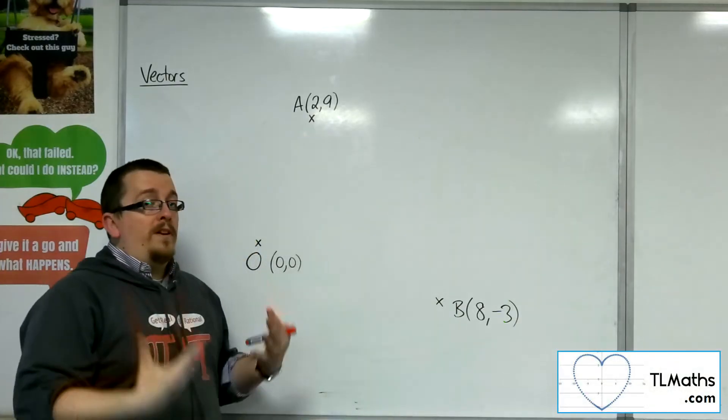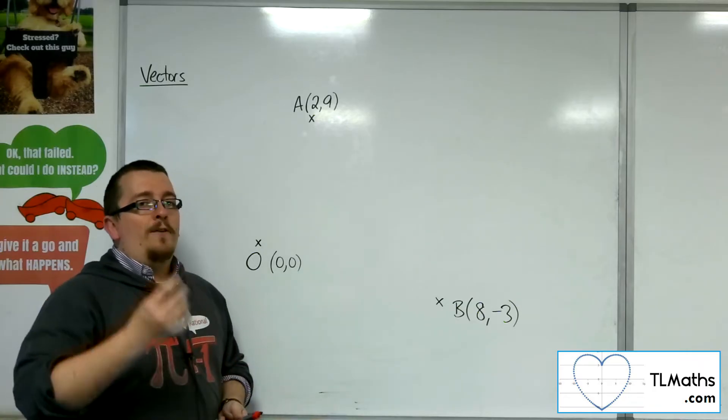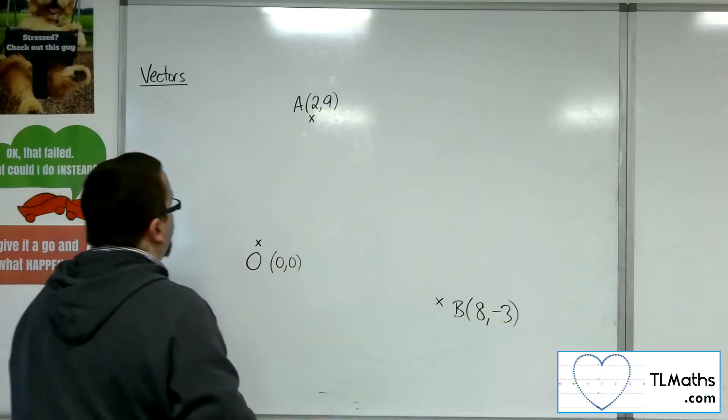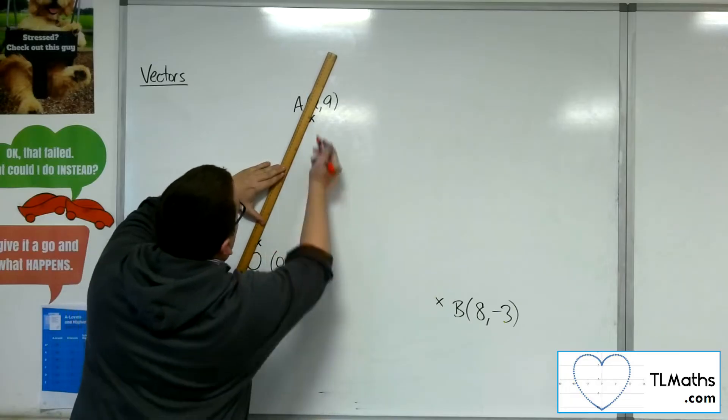So when I talk about a position vector, a position vector is just an instruction of how to get from the origin to that point. So if I was asked to find the position vector for A,